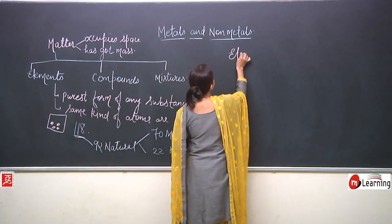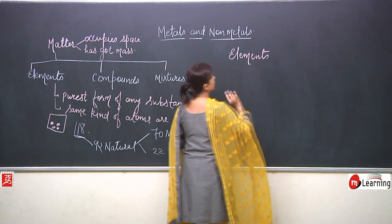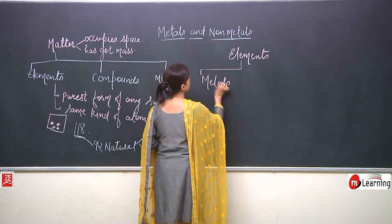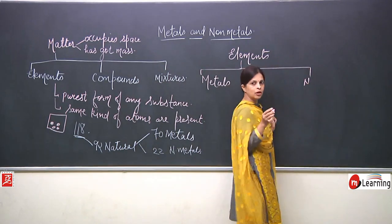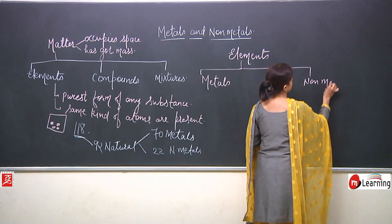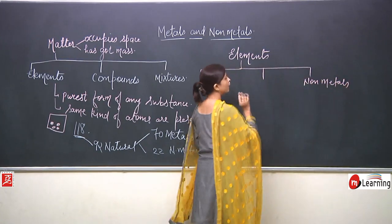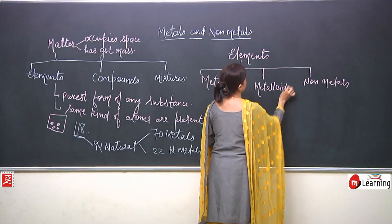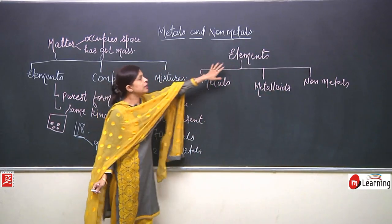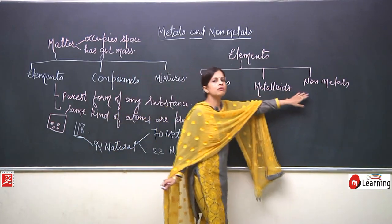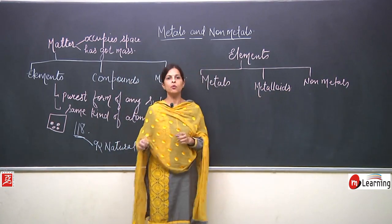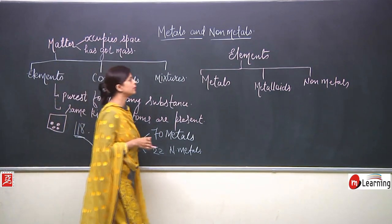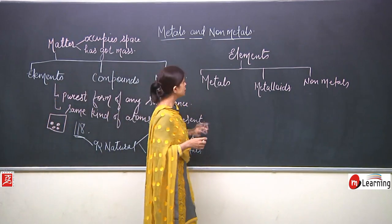Lavoisier said elements can be divided into three categories: metals, non-metals, and one more — metalloids. So elements can be divided into metals, non-metals, and metalloids. Now we are going to study the physical properties of metals.